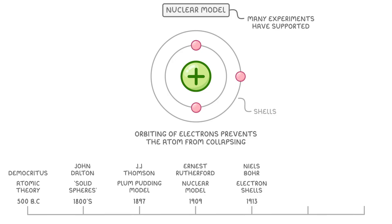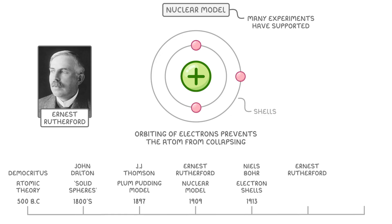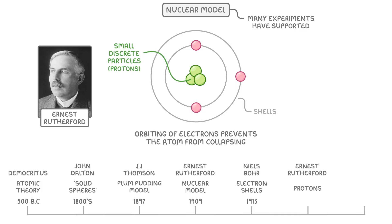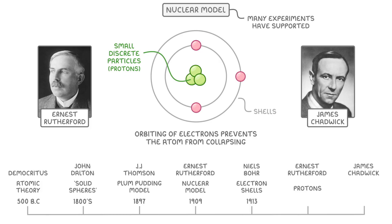In the years since then, many experiments have supported this model, and it's pretty much the same one we follow today, with just a few small changes. Further experiments by Rutherford found that the positive charge in the nucleus is actually made up of small discrete particles, which we now know as protons. And a short while later, a man called James Chadwick provided evidence for neutral particles in the nucleus, which we now call neutrons.